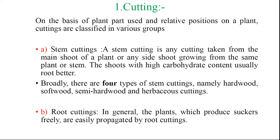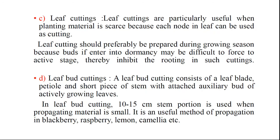The next one is root cutting. In general, plants which produce suckers freely are easily propagated by root cutting. A leaf cutting uses a leaf for the purpose of propagating a plant, and that leaf cutting should preferably be done during the growing season, because buds that have entered dormancy may be difficult to force to the active stage and thereby inhibit rooting. The last one is leaf bud cutting — on the side of the leaf there are a number of leaf buds, and if we cut that leaf bud and place it into the soil, it will give a new seedling.